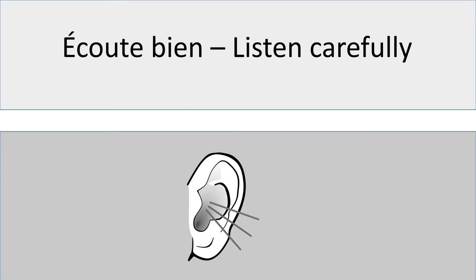Question number one: Où habites-tu? Question number two: Est-ce que tu habites seul? Question number three: Habites-tu dans un appartement ou dans une maison? Question number four: Habites-tu près d'un centre commercial? Habites-tu en ville? Question number five: Comment est ton quartier? Question number six: Est-ce que tu t'entends bien avec tes voisins?